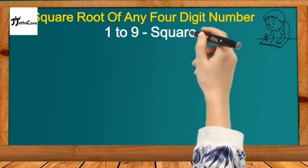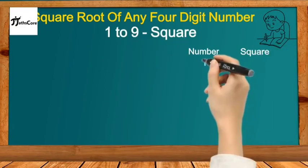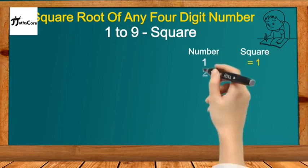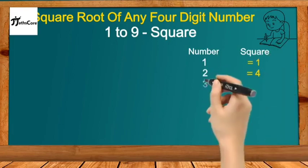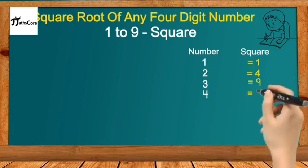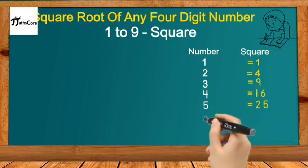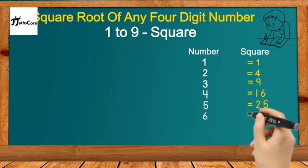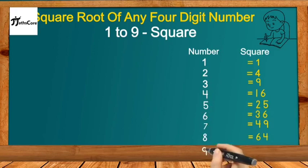For this, you should know the squares of 1 to 9 very well. 1² = 1, 2² = 4, 3² = 9, 4² = 16, 5² = 25, 6² = 36, 7² = 49, 8² = 64, 9² = 81. By observing these squares, we need to make a table.